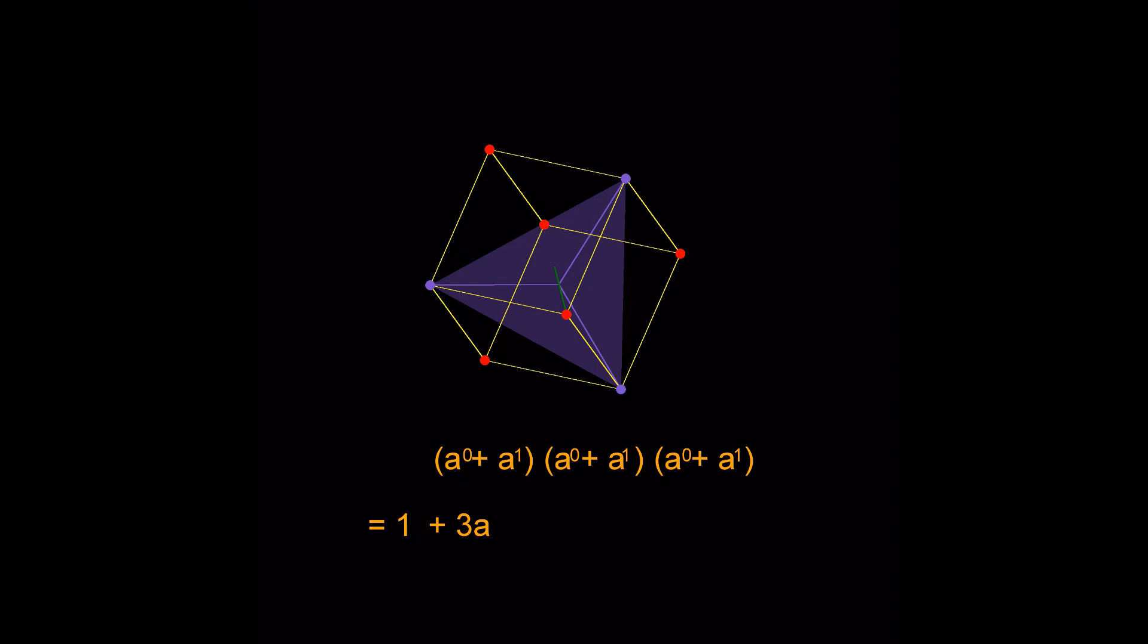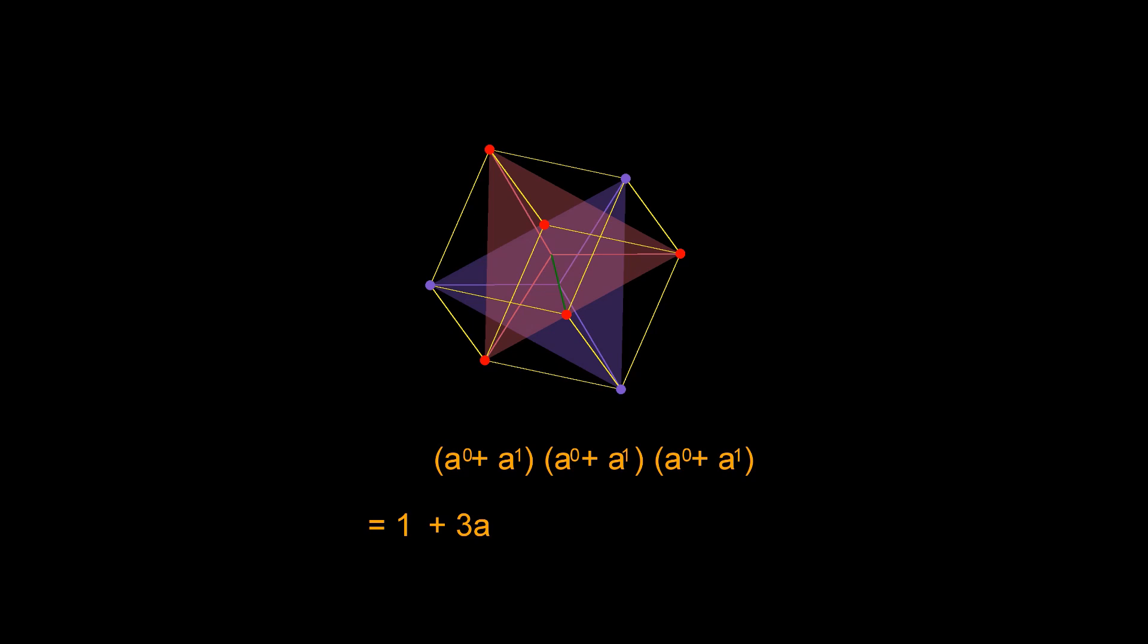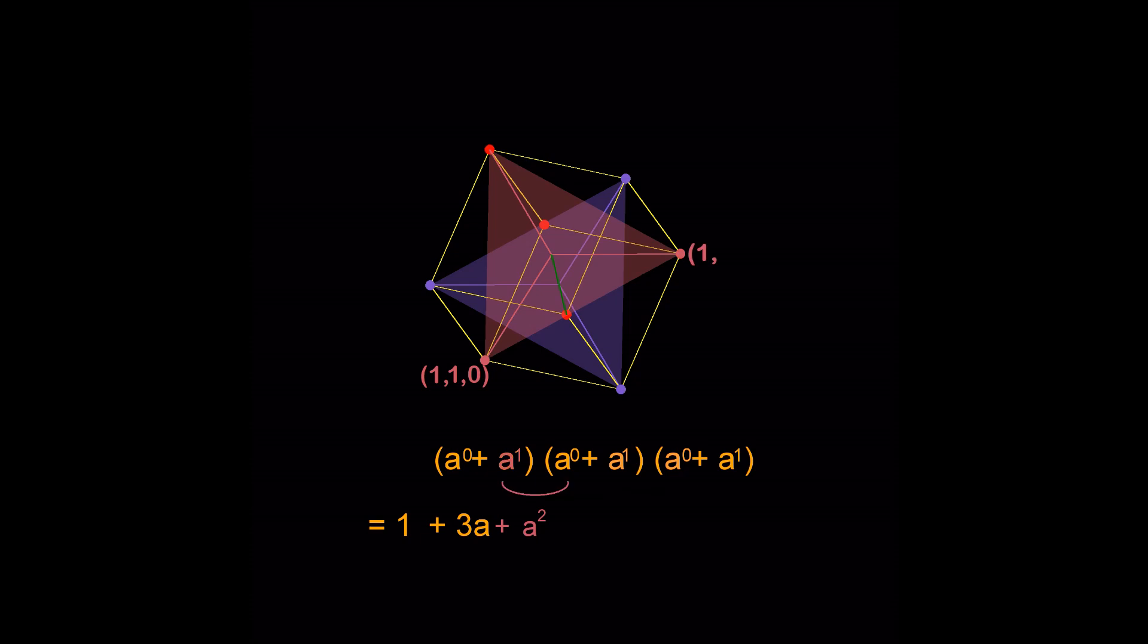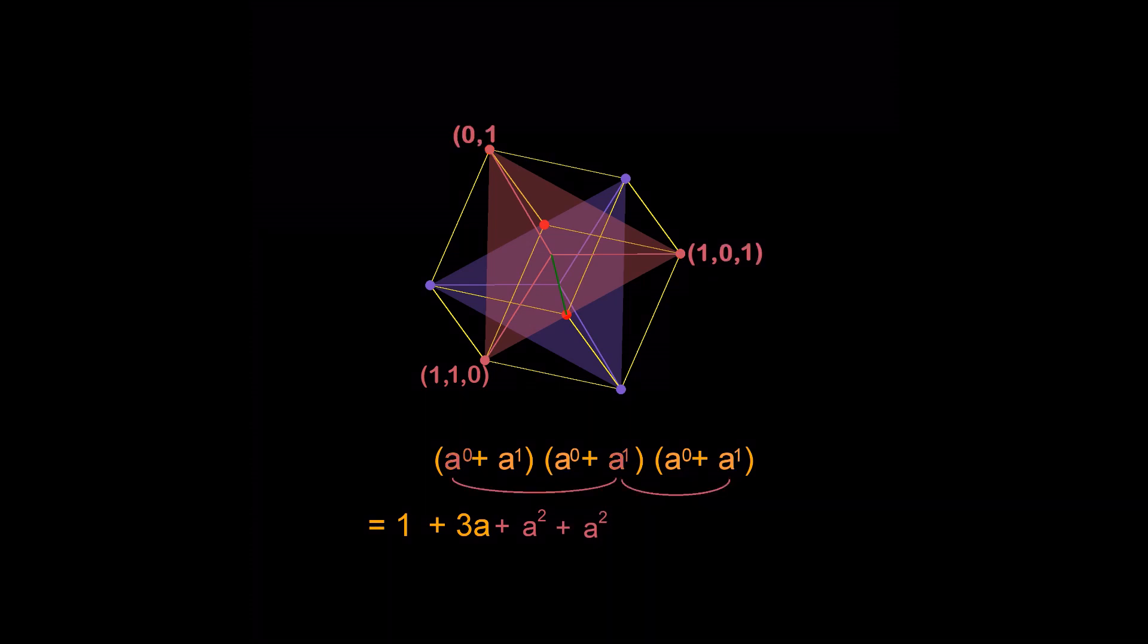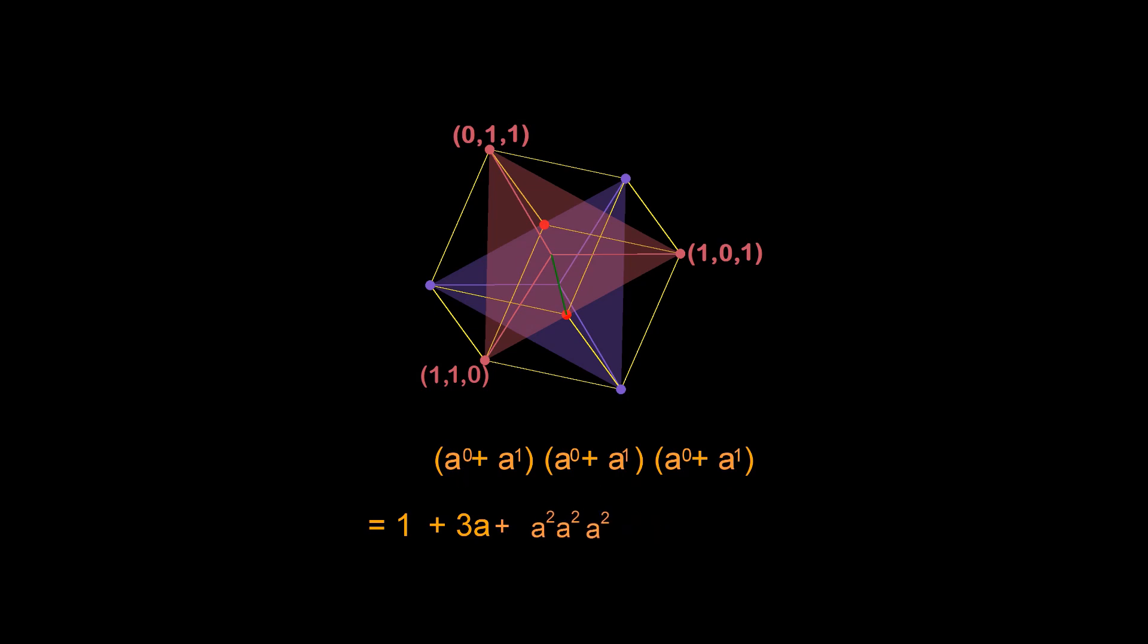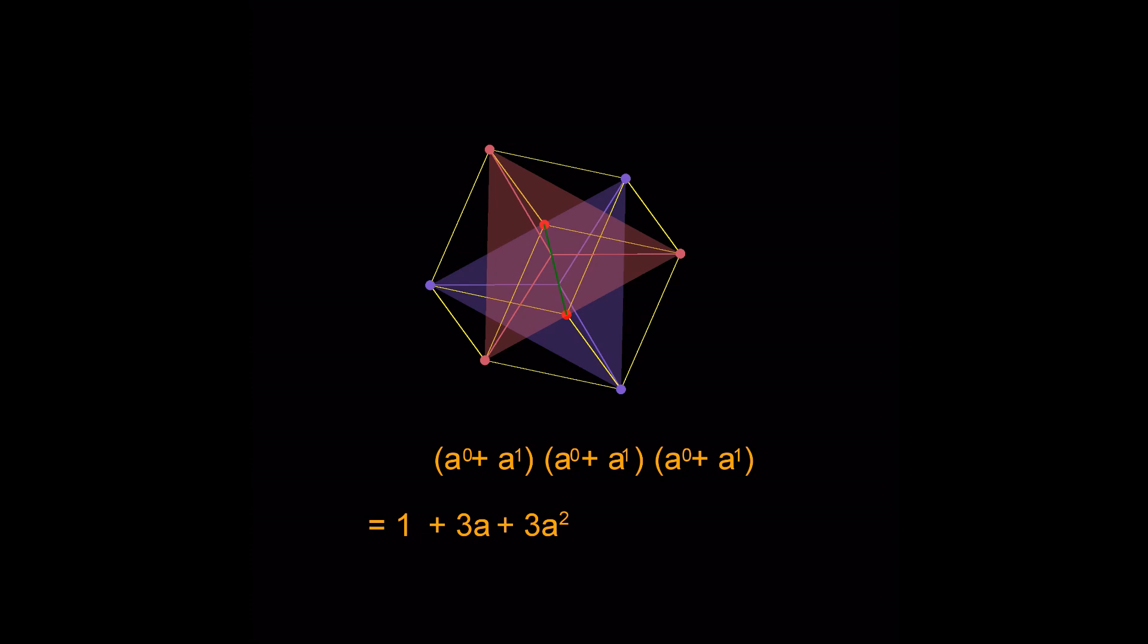We keep moving along the main diagonal until two thirds of the way we hit another plane that again touches three points. And these three points each contribute 2 1s and 1 0 making for the algebraic term of 3a square. And finally, we reach the last untouched point which is 1 1 1 corresponding to a cube.